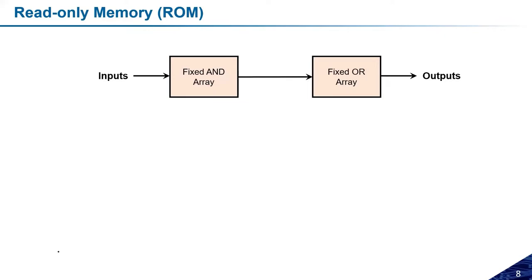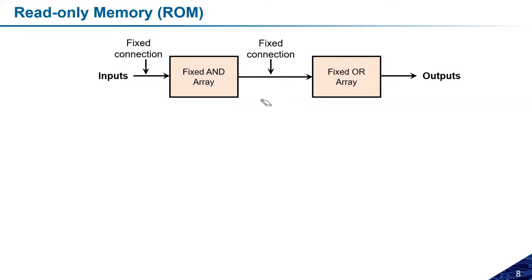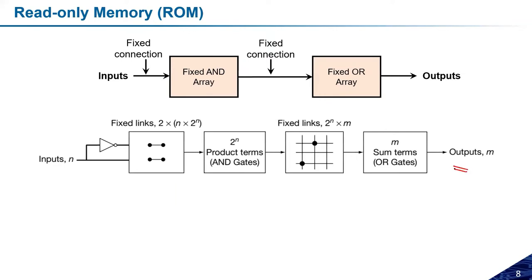To design a circuit based on read-only memory, the input side is fixed and the OR connections are also fixed. Suppose there are product terms with 2^n AND gates, and each AND gate has n inputs. Then the total number of fixed links on the AND side will be 2 × n × 2^n.